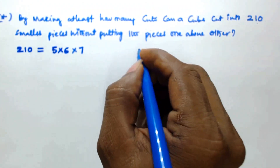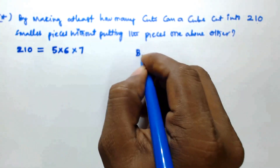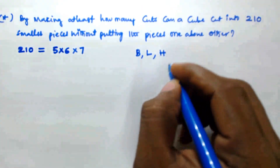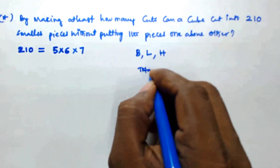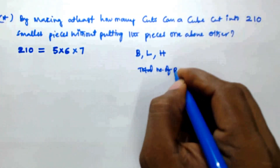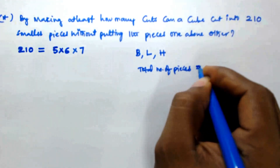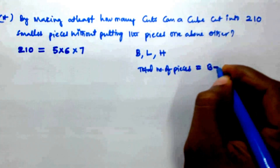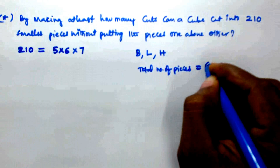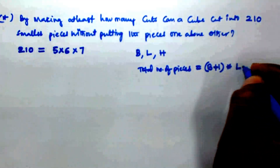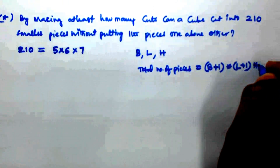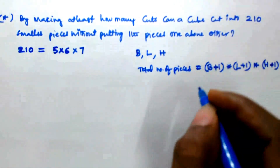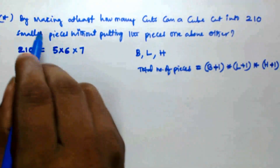In the previous video we saw that if b cuts are made along the breadth, l cuts along the length, and h cuts along the height, then the total number of pieces is equal to (b+1) × (l+1) × (h+1).